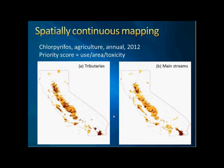The result is not in GIS format, but we have to do some manual post-processing. There are two results: one for the tributaries and the other one for the mainstream. As you can see, for the tributaries we get higher concentration scores. We also identified some hot spots such as the West San Martin, the Salinas River Valleys, and other areas.